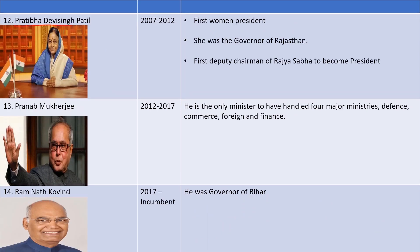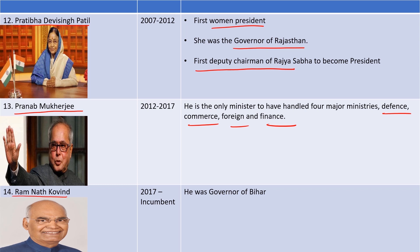Pratibha Patil was the first woman President of India and was previously Governor of Rajasthan. For other related details, check the description box. Thank you.